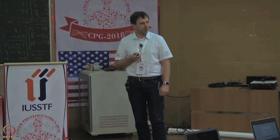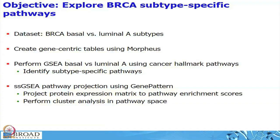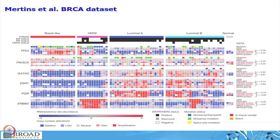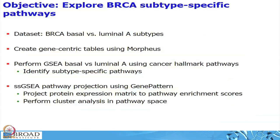One approach is the classical GSEA using the Java application. The second approach uses single-sample GSEA to project our protein matrix into pathways. I also plan to use Morpheus for cluster analysis on the pathways. I cannot guarantee everything will work due to internet connectivity, but I've made the slides as comprehensive as possible so you should be able to repeat these exercises at home. We are only looking at basal versus luminal A and are interested in cancer hallmark pathways — a small, compact, well-annotated curated pathway database.